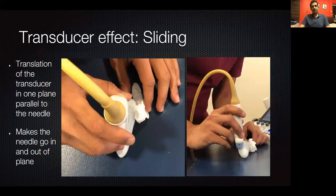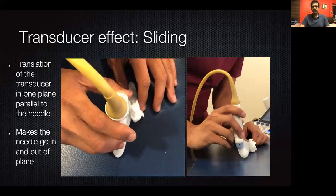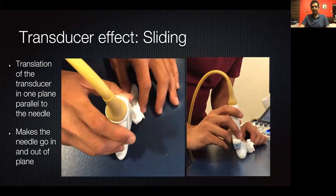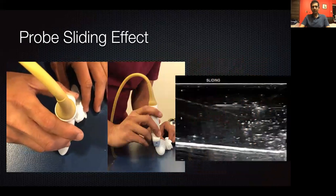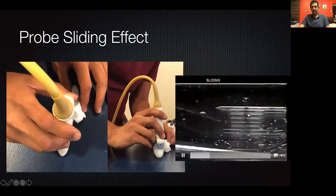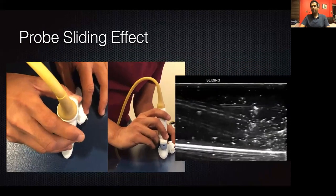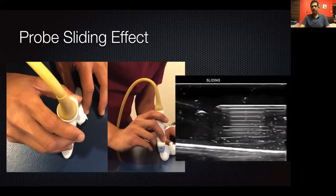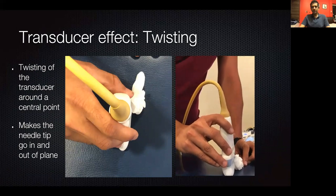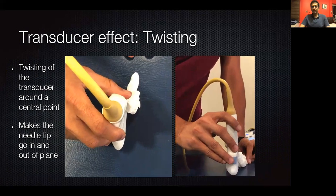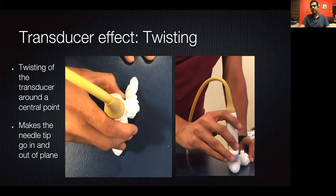The second thing is the effect of the transducer. Slight changes in transducer position make a very significant difference in needle visualization. The first movement is sliding — moving the transducer straight in the horizontal plane across the needle. As you do that, the needle goes in and out of the ultrasound plane and you may or may not see it depending on where you are. The second effect is the twisting effect: if you hold the transducer slightly oblique to the needle edge, you may see part of the needle but not the tip, so you may not be at exactly the point you want.